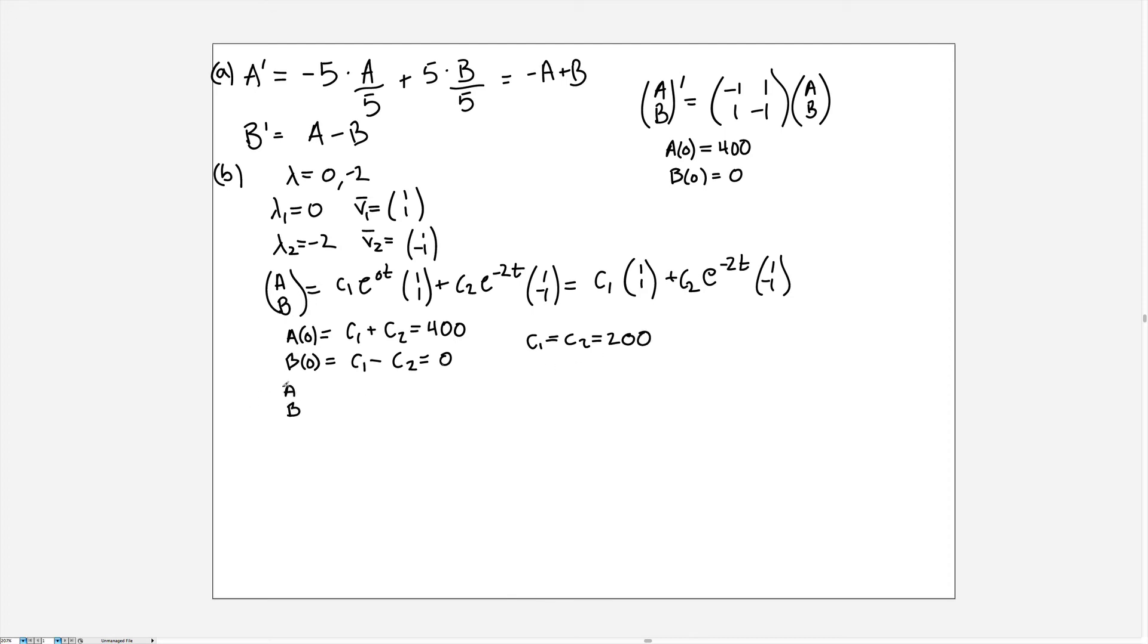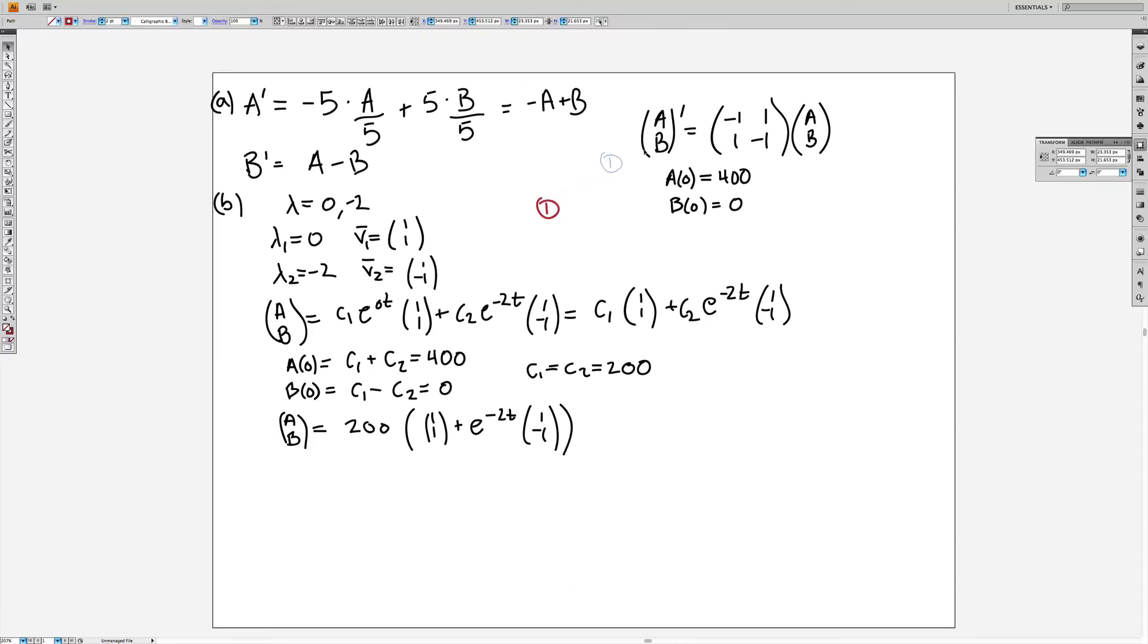So the solution for this particular initial value problem will be 200 factored out, multiplied by the vector (1, 1) plus e^(-2t) times the vector (1, -1). So as far as points, there'd be one point for the matrix equation and another point for the initial condition, another point for getting the eigenvalues correct and another point for each of the eigenvectors, and then another two points for getting the form of the general solution correct, and finally another point for getting the initial conditions matched correctly.